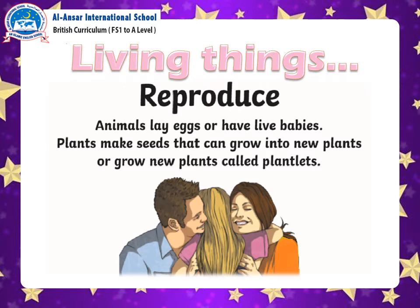Living things reproduce. Reproduce means they can have babies. You are the baby of your parents, now grown up — a young boy or a girl. In the same way, plants also have babies; we call them plantlets. And animals also have babies, because all living things reproduce — that means they can have babies.